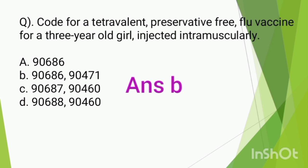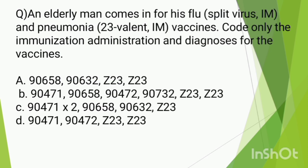Question number 8. An elderly man comes in for his flu — split virus intramuscularly — and pneumonia 23, also intramuscularly. We need the vaccine codes, and the immunization administration and diagnosis codes for the vaccines. Two vaccines are administered by intramuscular route.